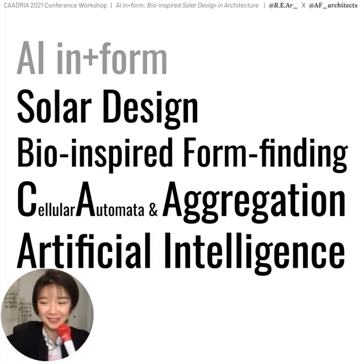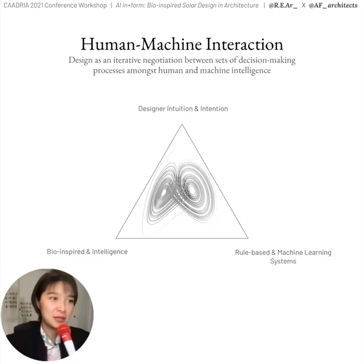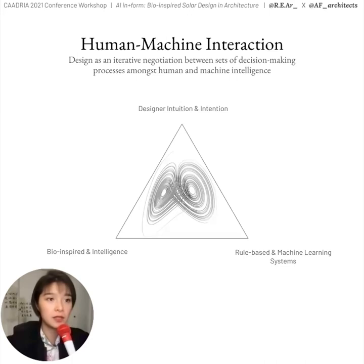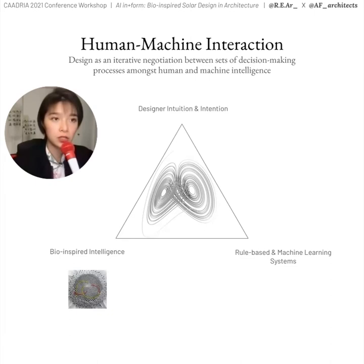We wish to develop a critical understanding of how humans and machines can interact in developing diverse combinatorial pipelines through the exchange of information. It is not just AI generating forms or images, but how different intelligences inform design — from designer intuition to algorithmic generation — and how information is used within design as sets of iterative decision-making processes. We define AI as both rule-based or agent-based systems and machine learning systems, both of which we will experiment with.